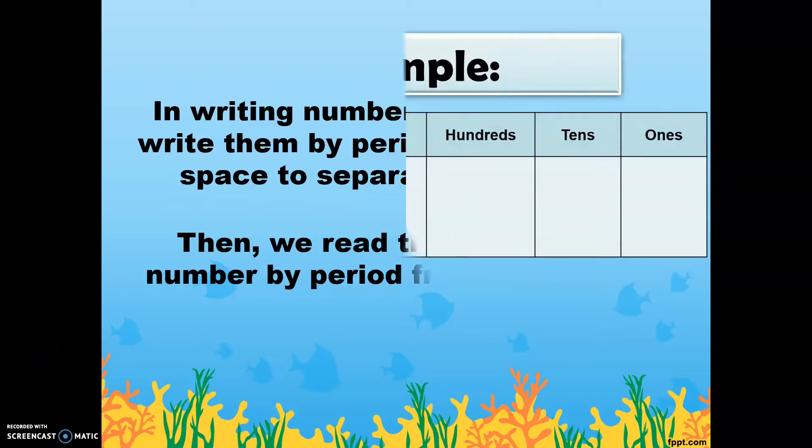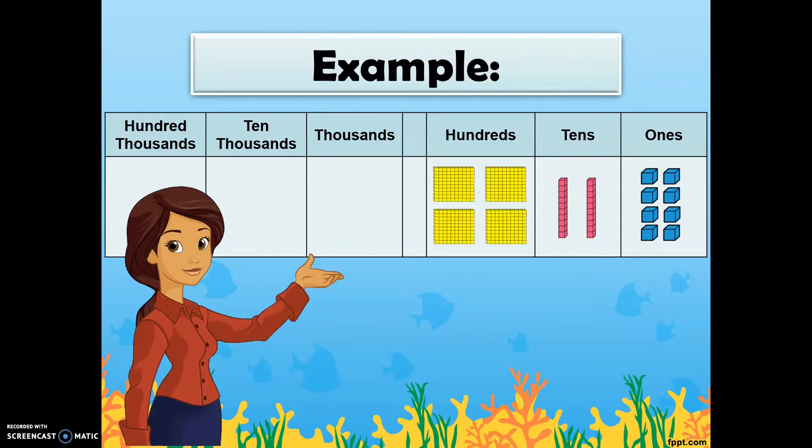For example, we have 8 ones, 2 tens, 4 hundreds, and 1 thousands. We can write this value or the number these blocks represent through symbols.